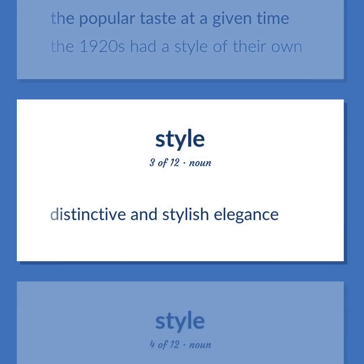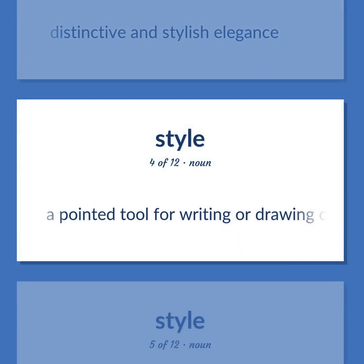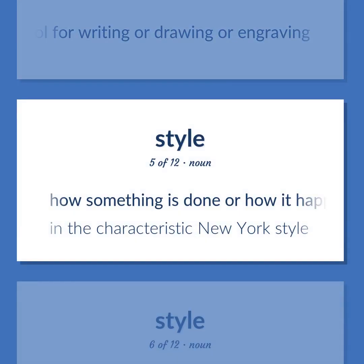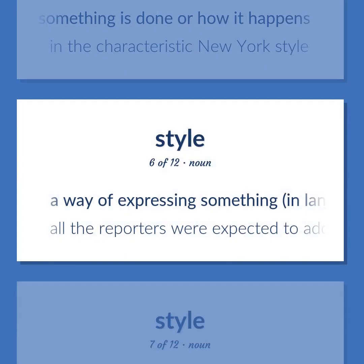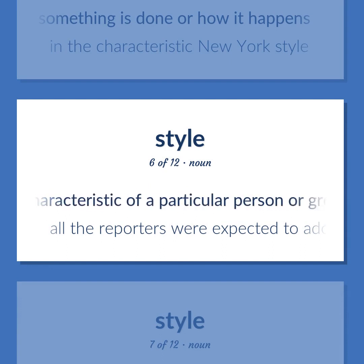Style: Distinctive and stylish elegance. Also: a pointed tool for writing, drawing, or engraving. Also: how something is done or how it happens. Example: In the characteristic New York style. Also: a way of expressing something in language, art, or music that is characteristic of a particular person or group of people or period.